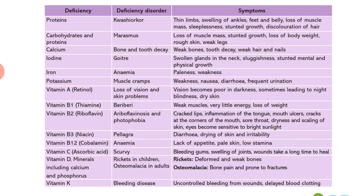Calcium deficiency causes bone and tooth decay, weak bones, tooth decay, and weak hair and nails. Iodine deficiency causes goiter — swollen glands in the neck, sluggishness, and stunted mental and physical growth. Iron deficiency causes anemia — paleness and weakness. Potassium deficiency causes muscle cramps, weakness, nausea, diarrhea, and frequent urination.